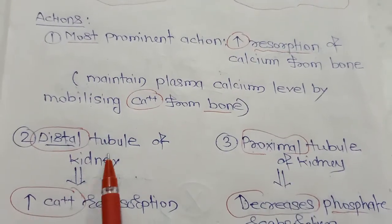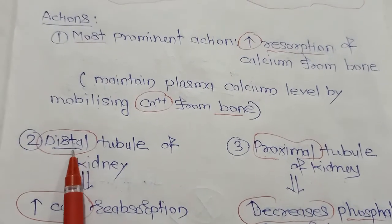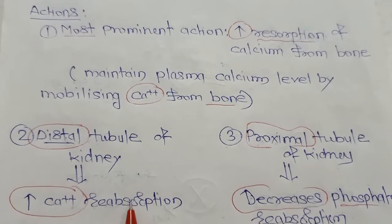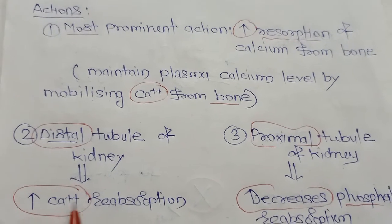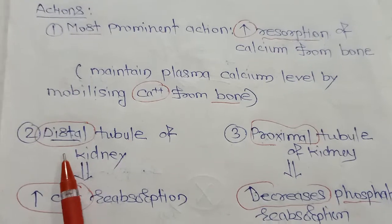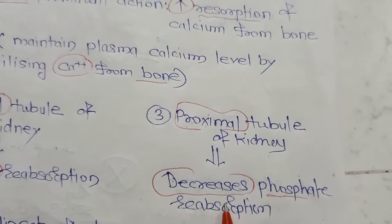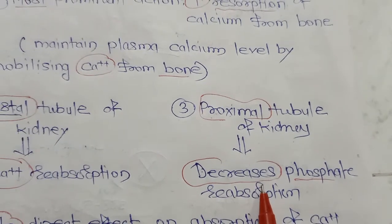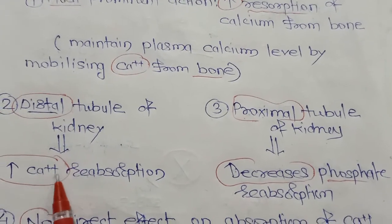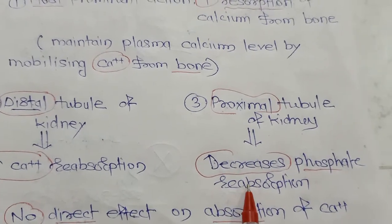PTH also acts on the kidney. By acting on the distal tubule of the kidney, it increases calcium reabsorption. By acting on the proximal tubule of the kidney, it decreases phosphate reabsorption.